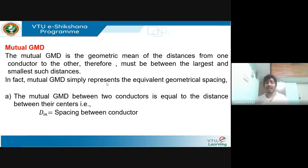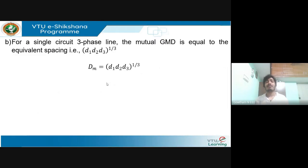The mutual GMD represents the equivalent geometrical spacing between conductors. Its value lies between the largest and smallest distances. The mutual GMD between two conductors equals the distance between their centers. For a single circuit three-phase line, the equivalent mutual GMD is (D1 × D2 × D3)^(1/3), where D1, D2, D3 are the inter-conductor spacings.